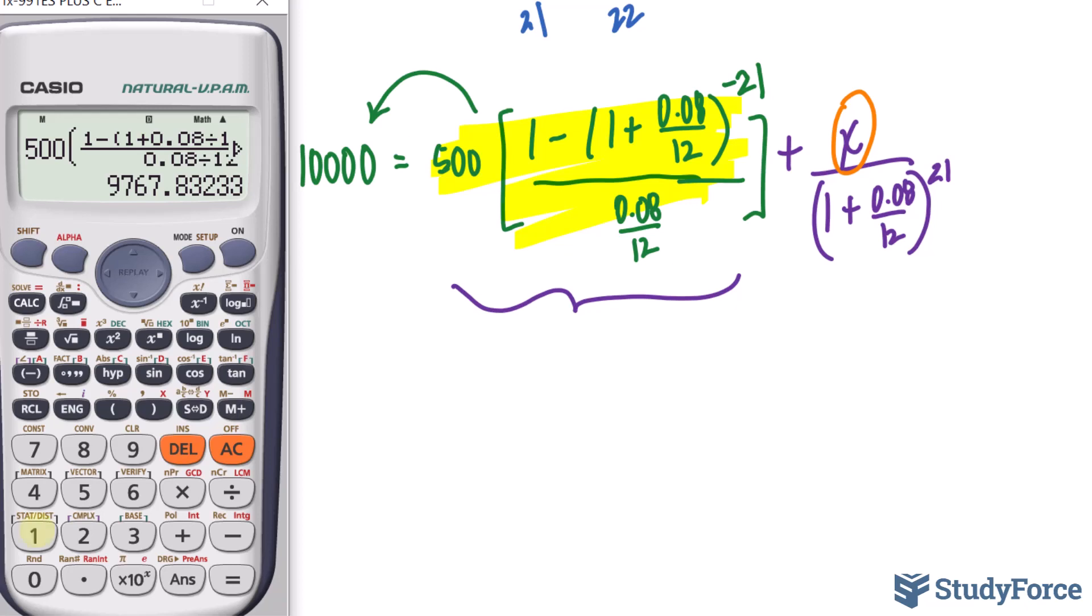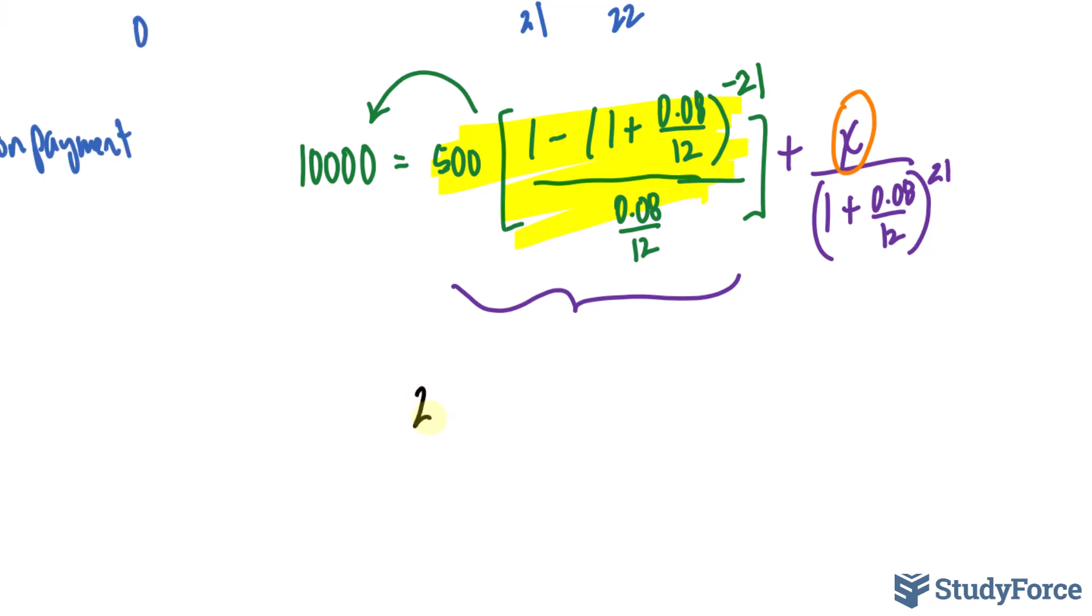What we end up with is 10,000 take away that value. Let's write it down: it's 232.1676. Now what we still have on the right side is this expression in purple that we haven't changed. We're still looking to find the value of X.